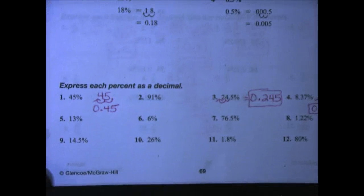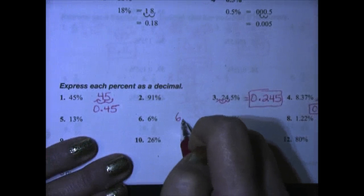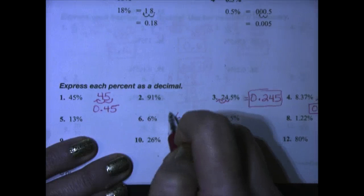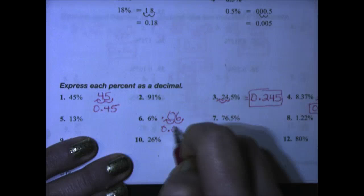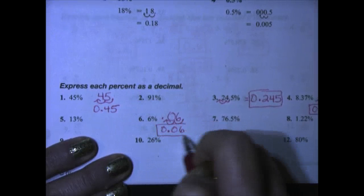Let's take a look at number six. We have 6%. We'll write that six out here. Here's our assumed decimal. Move it one, two places to the left, and we get 0.06 or six one-hundredths.